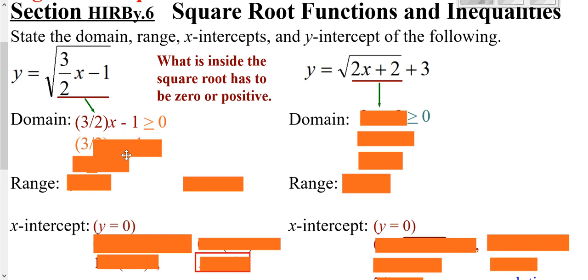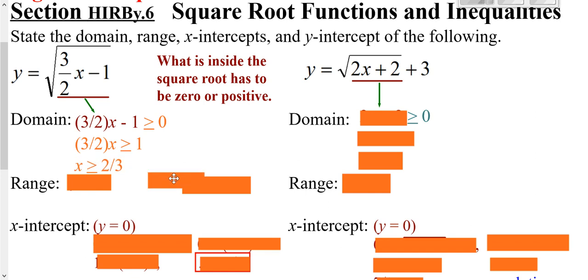We'll go ahead and add one to both sides, multiply both sides by two-thirds — or you can divide both sides by three-halves. Remember, dividing by a fraction is multiplying by the reciprocal. That's your domain.